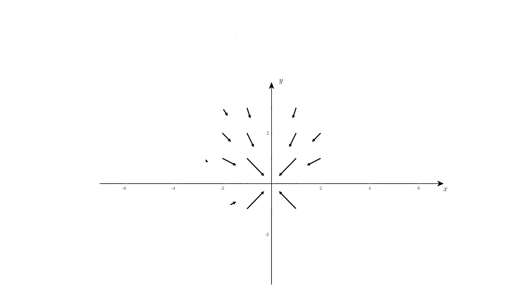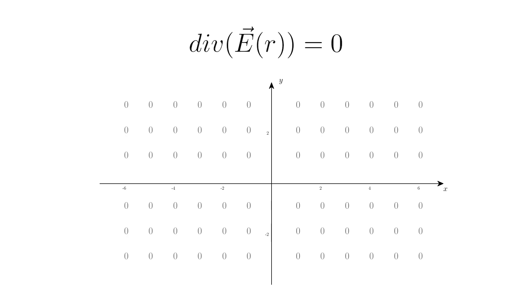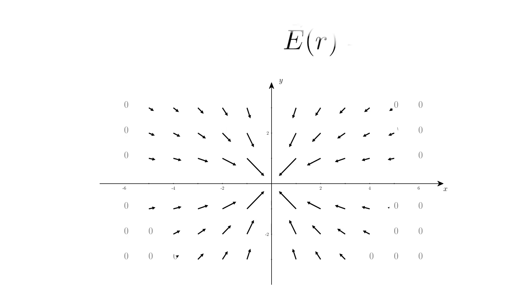I can also try with the other example. And here comes something special. Because we have a 1 over r to the power of 2, the divergence is 0 everywhere. I'm telling you this because that's how charges behave. So this equation represented an electric field of a charge.